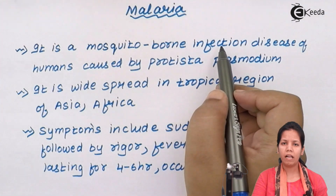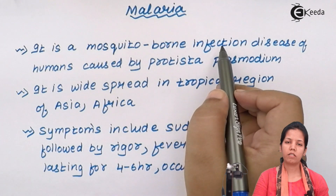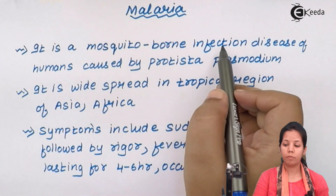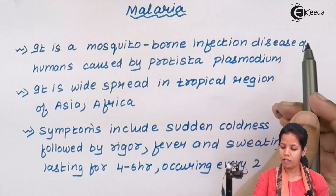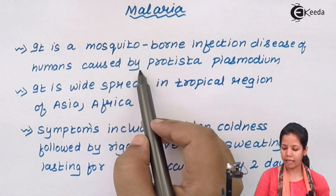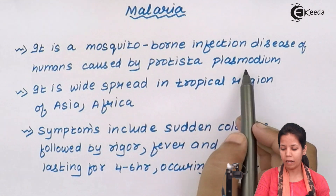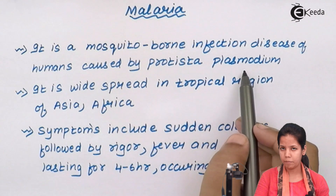Whenever a female Anopheles mosquito bites you, if it carries Plasmodium vivax, the protozoa, then there are chances of getting malaria. Humans can get malaria due to the protozoa Plasmodium vivax.